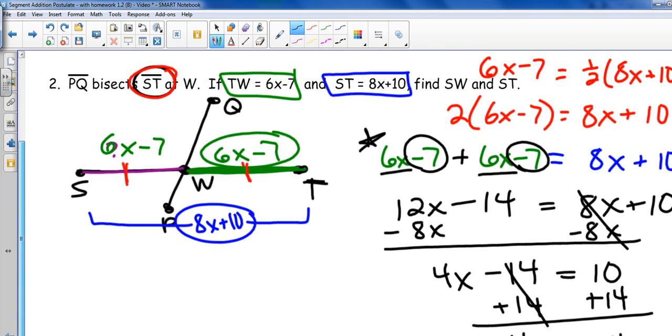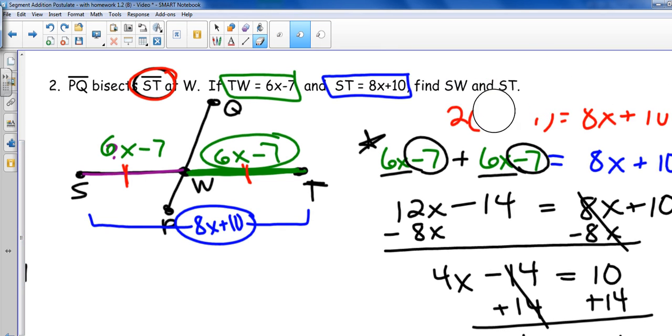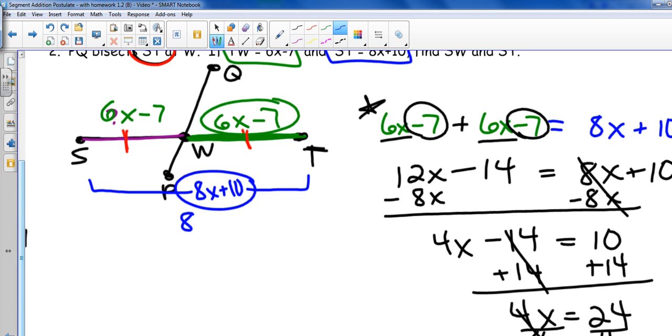But I'm not done because I'm in geometry class and I've got to solve the geometry problem. All I know is that the value of X is 6. Let's go back and read the question. The question reads, find SW and ST. At this point, I should be able to find anything I want because it's all right there in my picture. I've got expressions for everything. So I'm going to start with ST, which is down here. 8 times my X value, which was 6. I'm going to plug that in. 8 times 6 in my head, I'm getting 48 plus 10, 58 for my answer of ST.